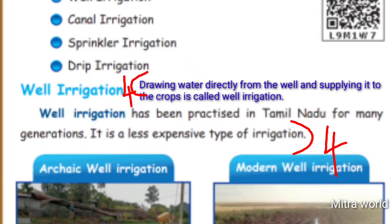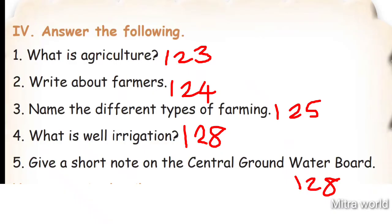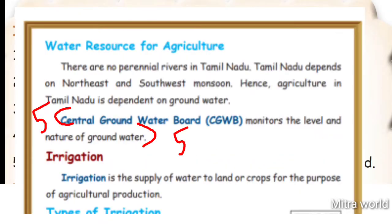Question 5: Give a short note on the Central Groundwater Board. Take page number 128. CGWB monitors the level and nature of groundwater.